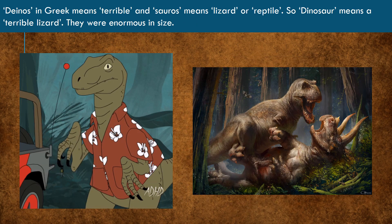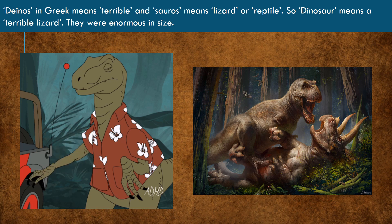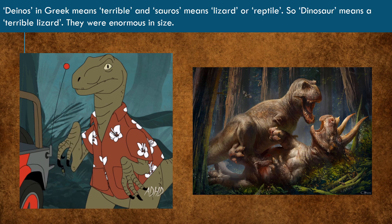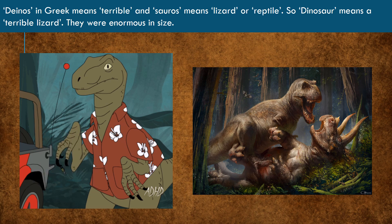Dinosaurs are a group of reptiles that have lived on earth for about 245 million years. The word Dinosauria is derived from the Greek words Dinos, meaning terrible, and Saurus, meaning lizard or reptile. So, dinosaur means a terrible lizard.